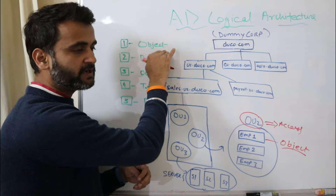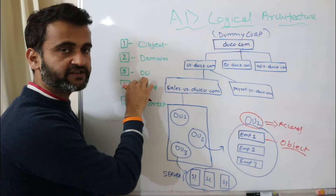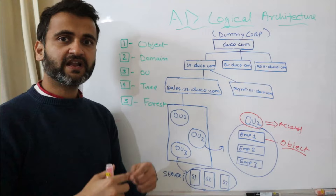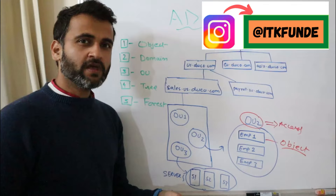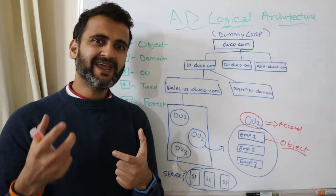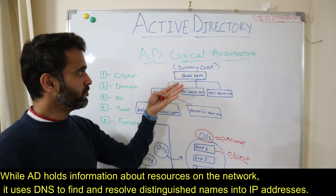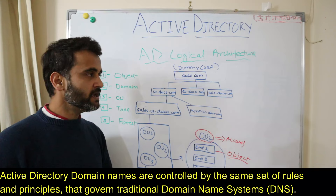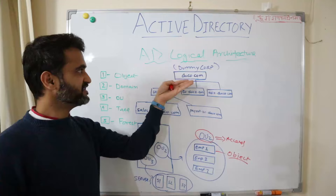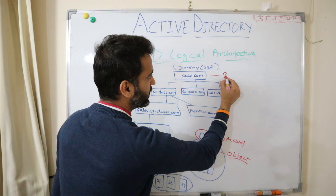Object is the most basic entity, and objects are organized under OUs, which are organizational units. Then you have domains. Domains are nothing but the collection of all your objects — all your objects will fall under a certain domain. If you've watched my DNS video, the domain name is derived by the domain name server, and Active Directory server and domain name server go hand in hand. So duco.com is organized as the domain for Dummy Corp, and an Active Directory can be set up for this domain. This particular duco.com is your root domain — this is your parent.